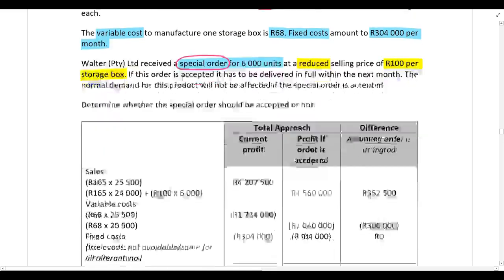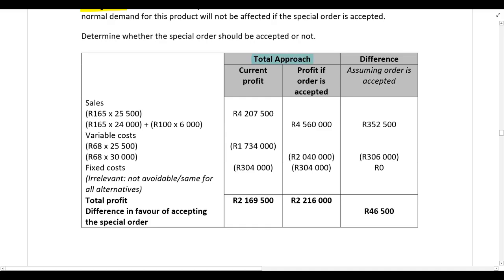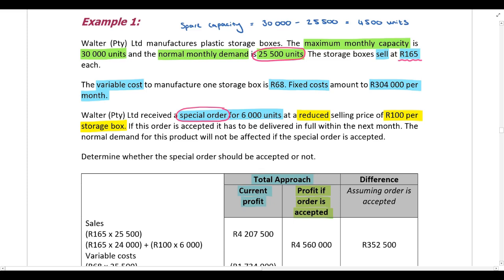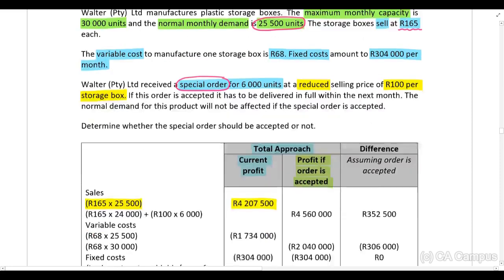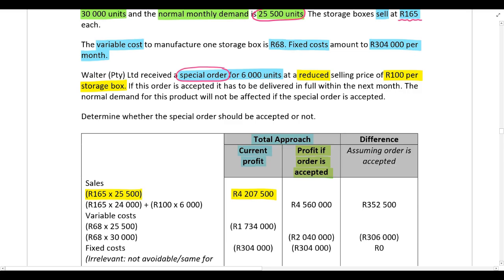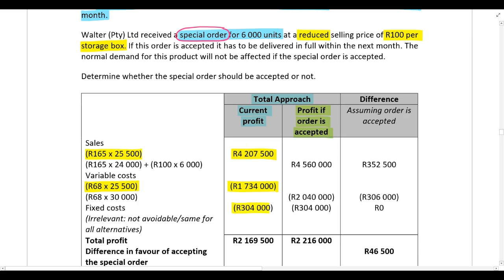We'll first use the total approach, which involves two separate calculations: current profit ignoring the special order, and profit if the order is accepted. Current profit: sales at R165 per unit × 25,500 units. Variable cost at R68 per unit × 25,500 units. Fixed costs remain R304,000 per month.